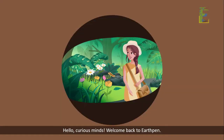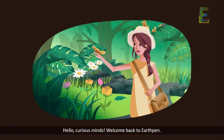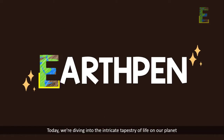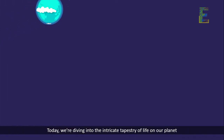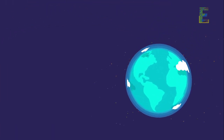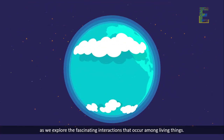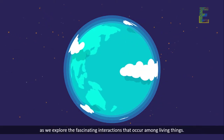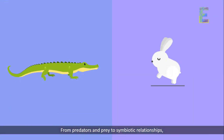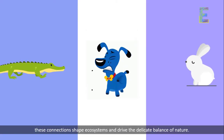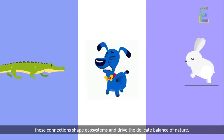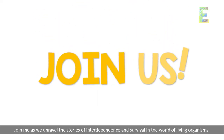Hello, curious minds. Welcome back to Earth Pen. Today, we're diving into the intricate tapestry of life on our planet as we explore the fascinating interactions that occur among living things. From predators and prey to symbiotic relationships, these connections shape ecosystems and drive the delicate balance of nature. Join me as we unravel the stories of interdependence and survival in the world of living organisms.